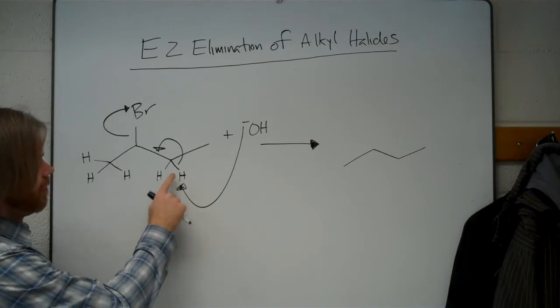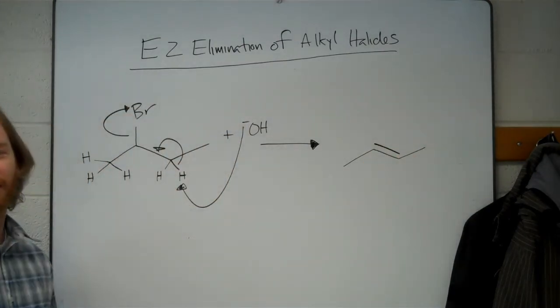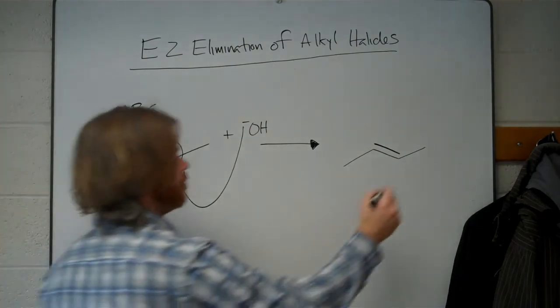So we've removed hydrogen here, its electrons have formed a new double bond, and the carbon-bromide bond is then broken, giving you bromide.